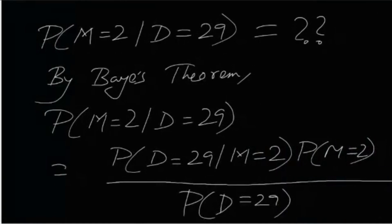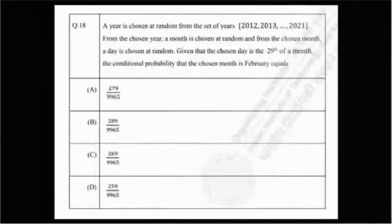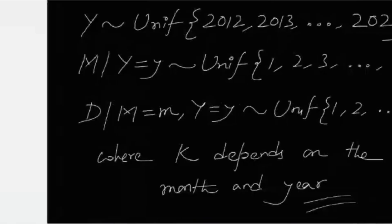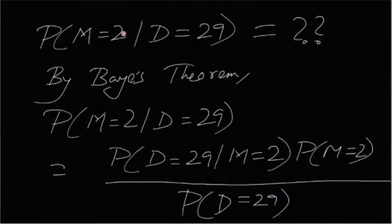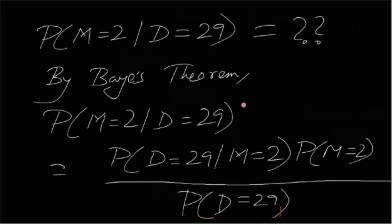Now we want to find P(M = 2 | D = 29) — the probability that the month is February given that the chosen day is the 29th. By Bayes' theorem, this equals P(D = 29 | M = 2) × P(M = 2) divided by P(D = 29). We are just flipping the conditional. We individually have to find each of these three quantities.